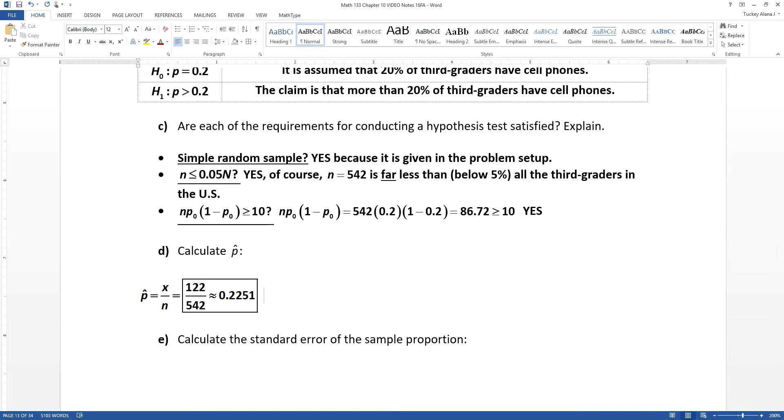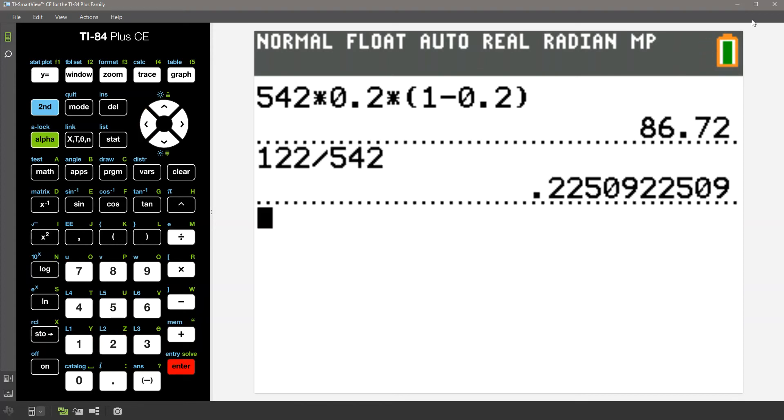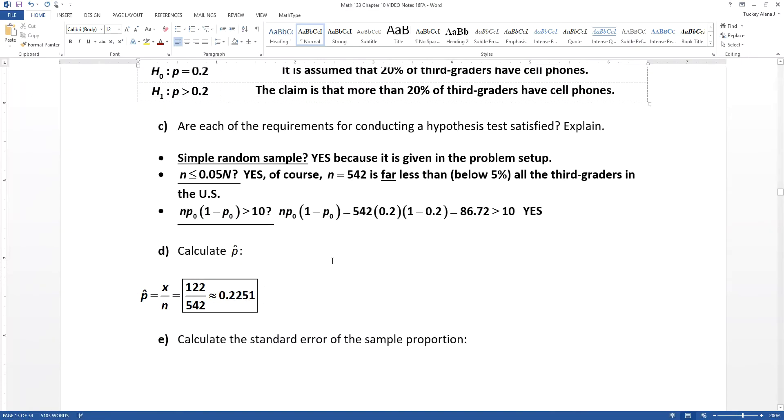X is the number of successes, N is the sample size. So you take 122, you divide it by 542, and you get 0.2251, so that would be your P-hat.